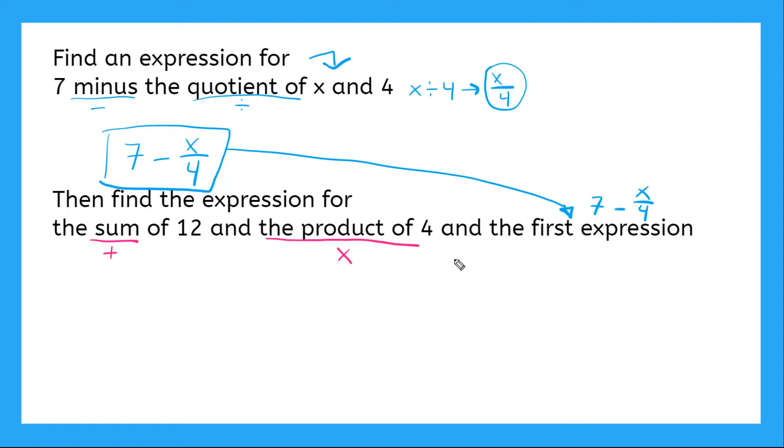So this might be a little bit tricky, but this is really using the distribution property. So I have to say four parentheses. Remember parentheses means multiplication: seven minus x over four, right? That's because order of operations, I need to do this subtraction problem before I can multiply by four. Okay, so there's the product of four in the first expression is right here. That's what this is. Now it says the sum of 12, so 12 plus the product of, that's all of this here, four times seven minus x over four.